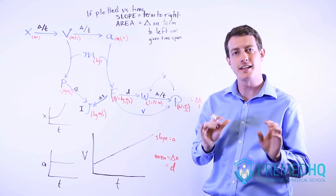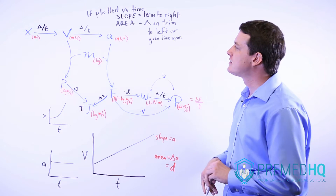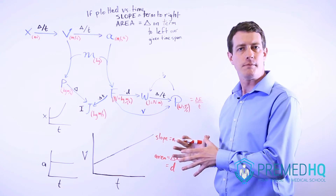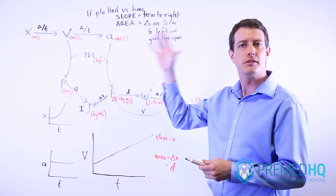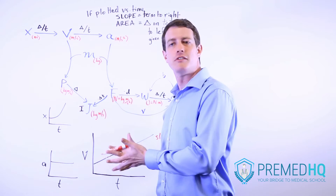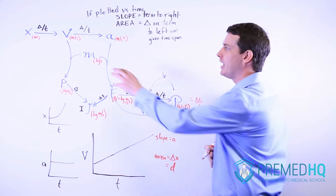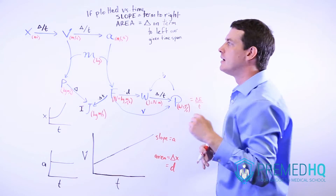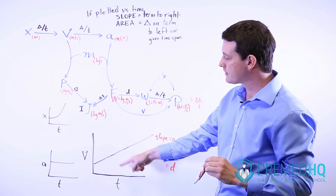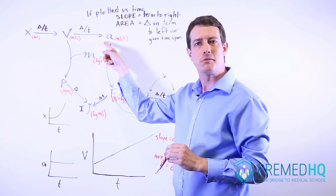The MCAT likes to test your understanding and analysis of graphical data, and the most common one in physics is seeing position, velocity, or acceleration plotted versus time. Moving to the right means you're looking at a derivative, and moving to the left means you're looking at an integral. The slope of a curve tells you the change in the term to its right — so for a velocity versus time plot, the slope tells you the acceleration.